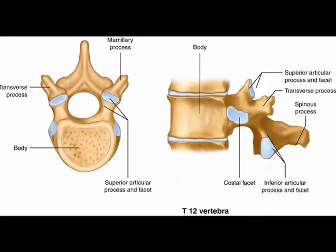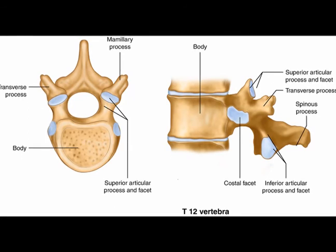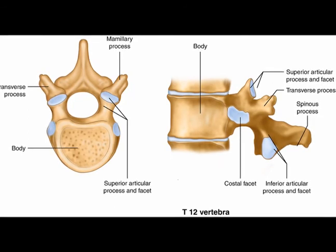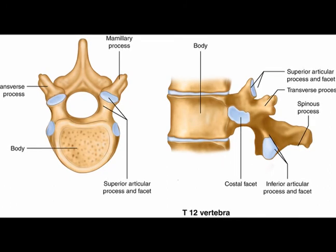T12 is unique in that it represents a transition from the thoracic to the lumbar vertebrae. It is thoracic in that it contains costal facets and superior articular facets that allow for rotation, flexion, and extension.